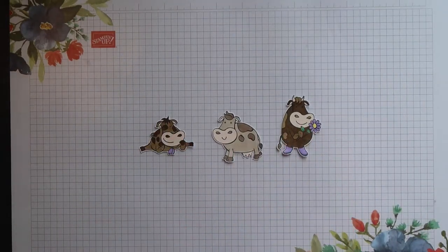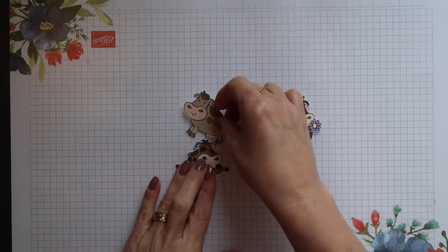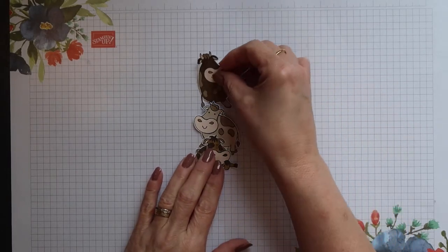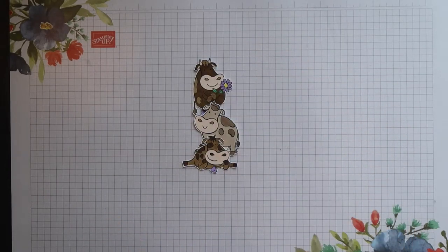These are my images cut out. Now I colored the middle one with Crumb Cake instead of Soft Suede and this is how they'll stack together.